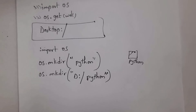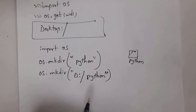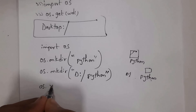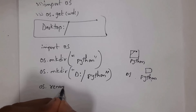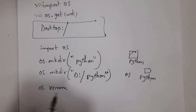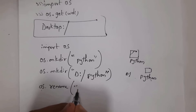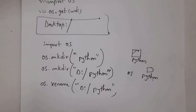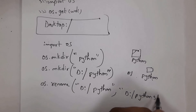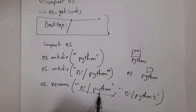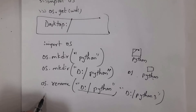Now I want to change the folder name from 'python' to 'python3'. Using the rename function we can rename any folder. Write 'os.rename("D:\\python", "D:\\python3")' — the first argument is the current folder name and the second is the new name. Whenever you run this line of code, it will change the folder name from 'python' to 'python3'.